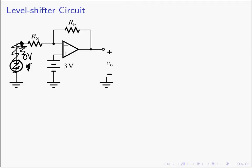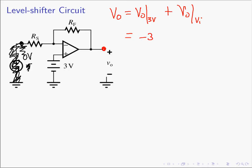If you look at that circuit, we see that we have the non-inverting amplifier: an RF resistor and an RS connected to ground. The output voltage due to the 3-volt source is a non-inverting amplifier result: Vout due to the 3-volt source equals positive 3 times one plus RF over RS. That would be the voltage at the output due to the 3-volt source acting alone.